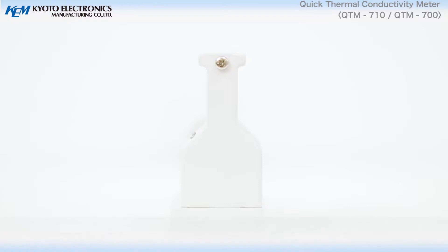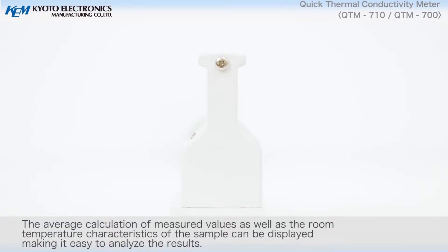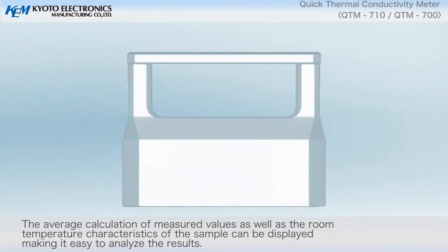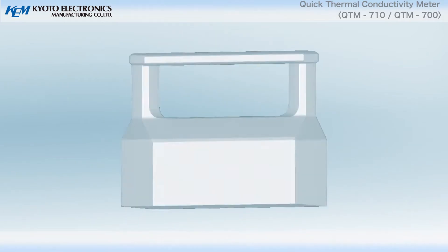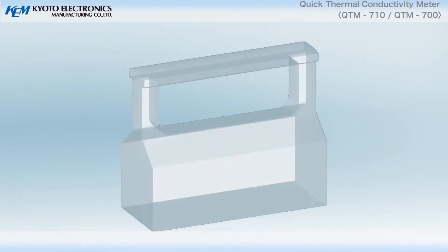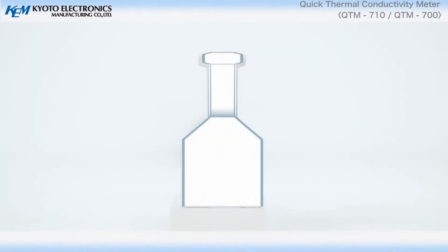The average calculation of measured values as well as the room temperature characteristics of the sample can be displayed making it easy to analyze the results. For the hot wire method, it is necessary to prepare two identical samples.